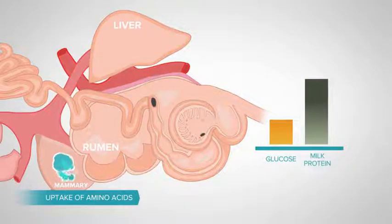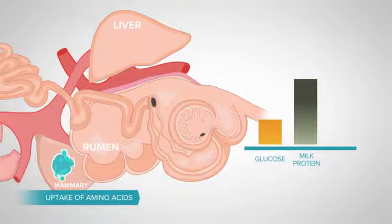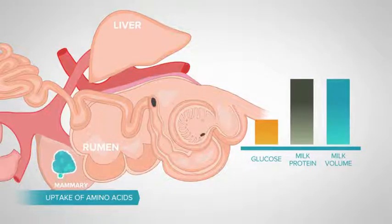So a diet high in starch, one that contains cereal grains, will result in more milk volume and more milk protein.